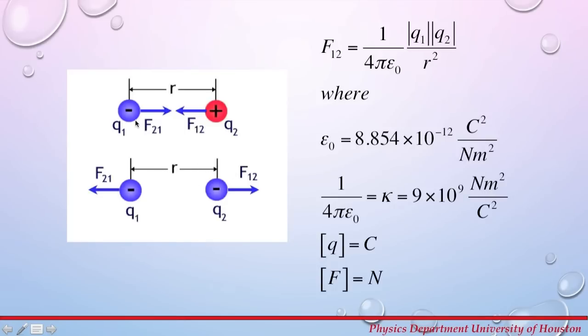For two charges q1 and q2 separated by a distance r, we can calculate the magnitude of force that q1 exerts on q2. This force would be 1 over 4π ε0 magnitude of charge 1 times magnitude of charge 2 divided by their distance squared, where ε0 is a constant and 1 over 4π ε0 is also a known constant.